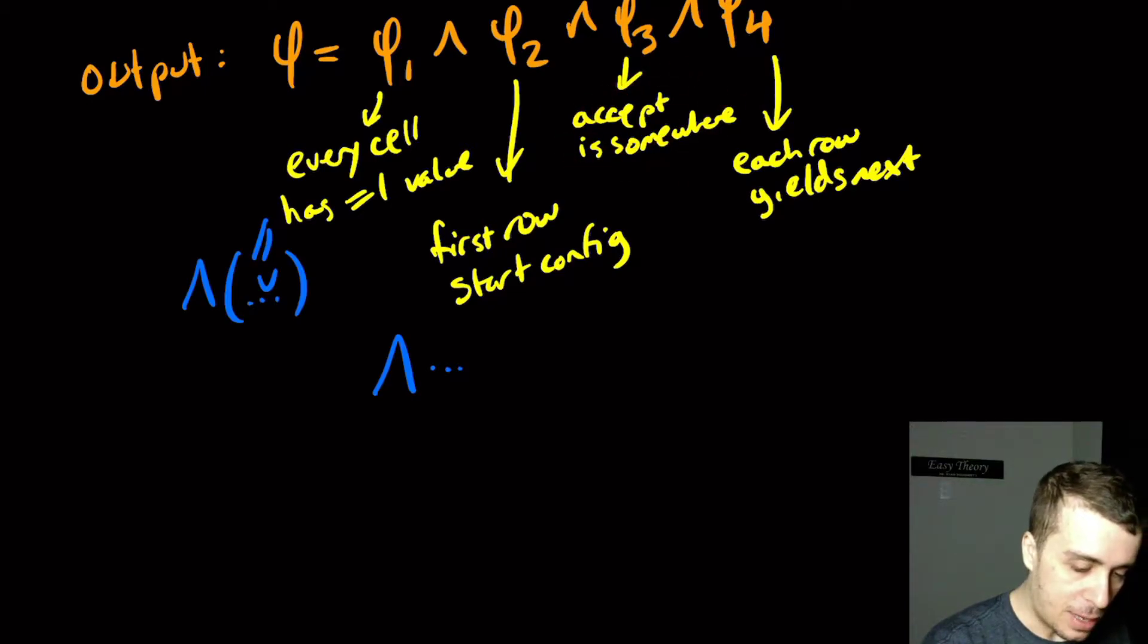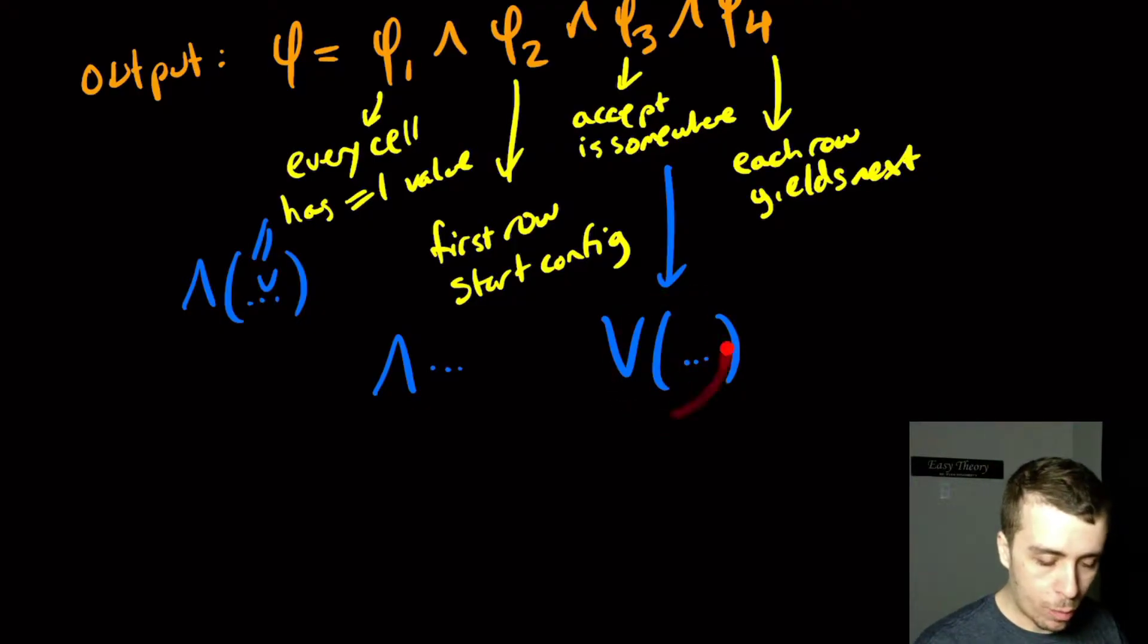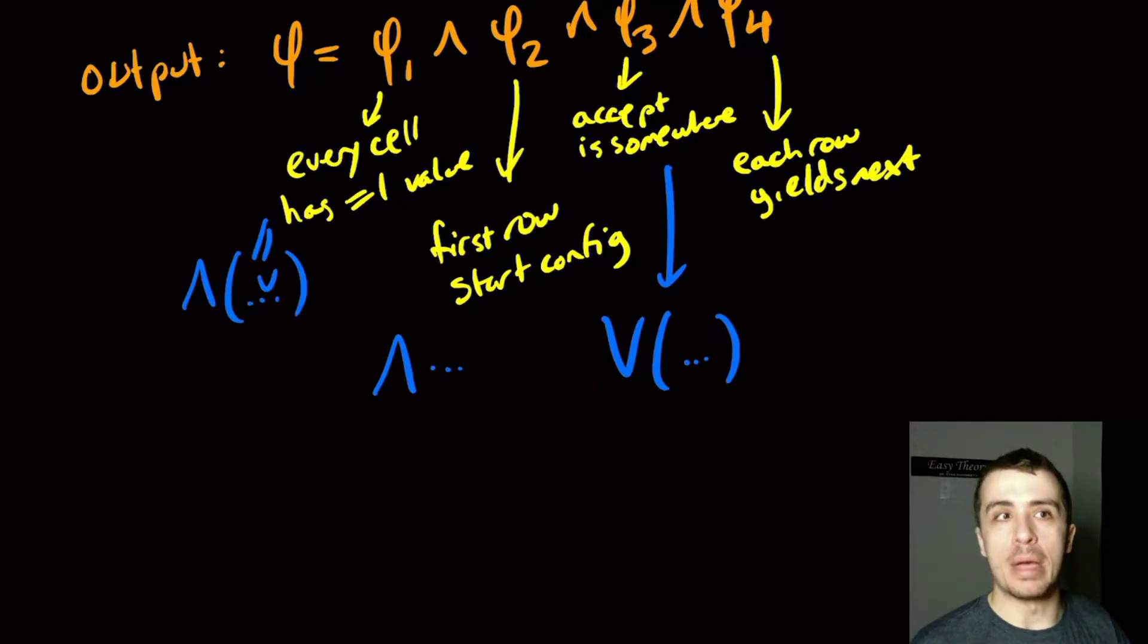For φ3, that turns out to be a giant disjunction of a bunch of stuff. So it's just a giant OR over everything, not a giant AND, a giant OR. Well, we know we're going to show how to deal with a giant clause or small clauses to get them down to three. So this turns out to be easy to deal with.